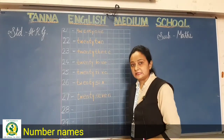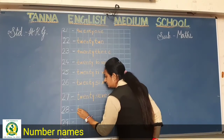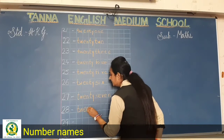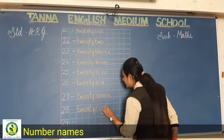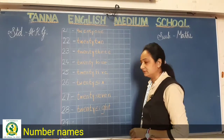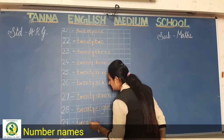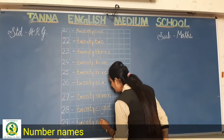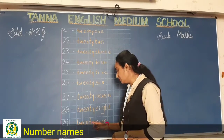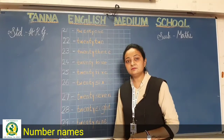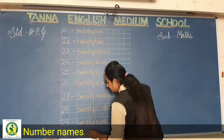For 28: again write the spelling of twenty and then eight — T-W-E-N-T-Y and E-I-G-H-T. For 29: T-W-E-N-T-Y and N-I-N-E. Now for 30, note that it is different — we write T-H-I-R-T-Y.